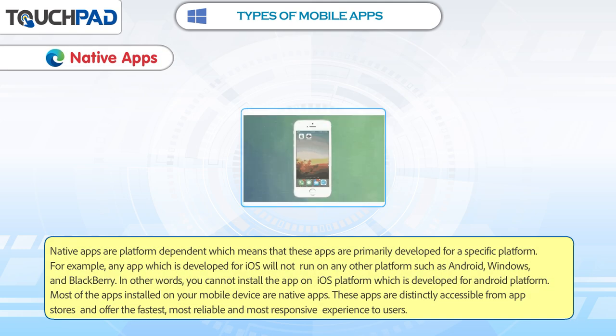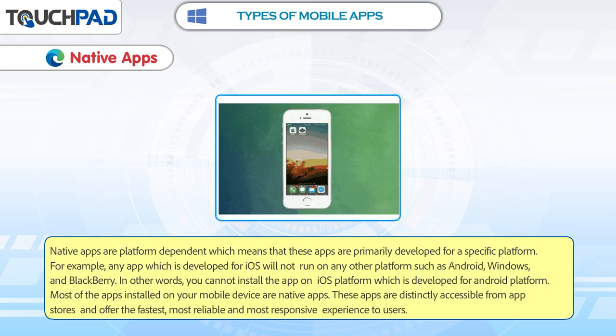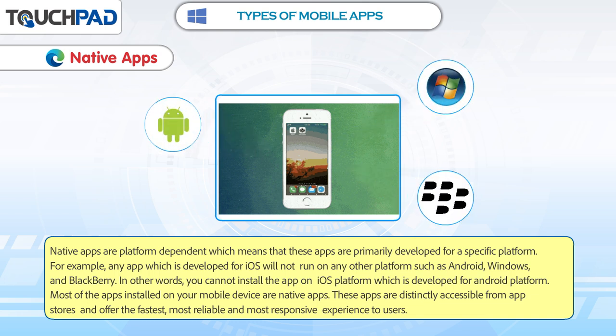Native Apps. Native apps are platform-dependent, which means that these apps are primarily developed for a specific platform. For example, any app which is developed for iOS will not run on any other platform such as Android, Windows and Blackberry. In other words, you cannot install the app on iOS platform which is developed for Android platform. Most of the apps installed on your mobile device are native apps.